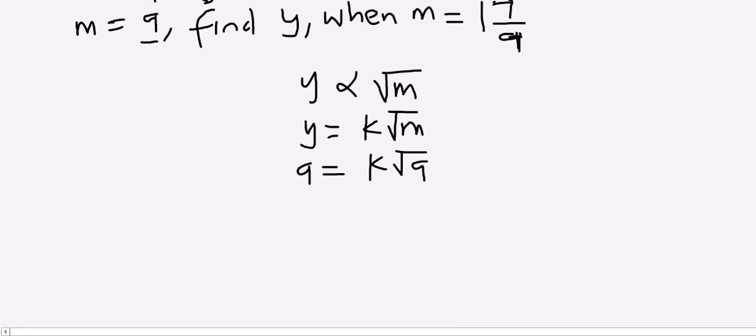So we can have k times the square root of 9, which is 3. We are arranging as k times 3 equals 9. So k would simply be equal to 9 over 3, which gives me 3.